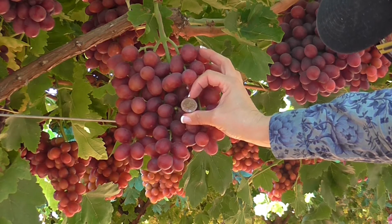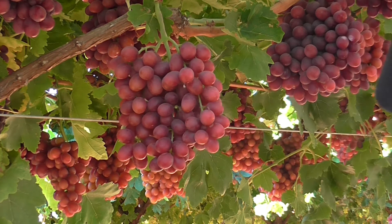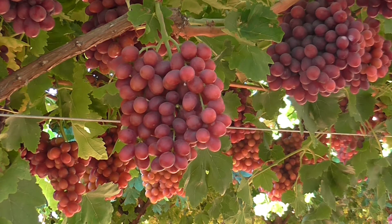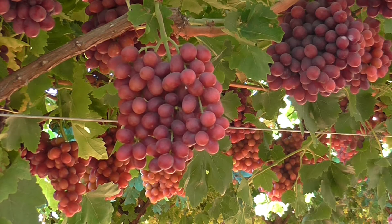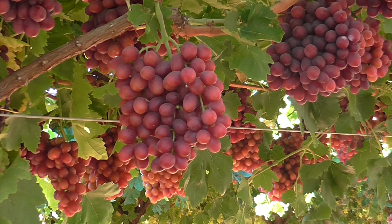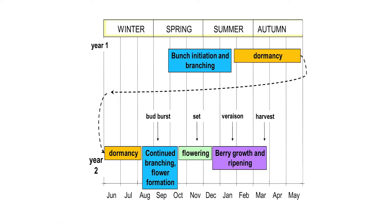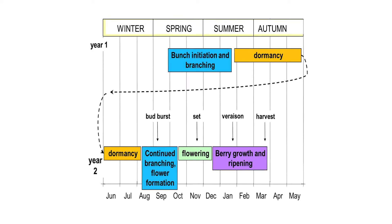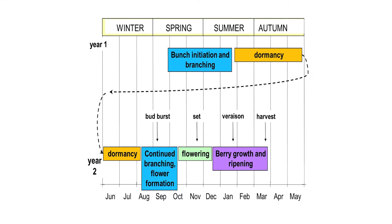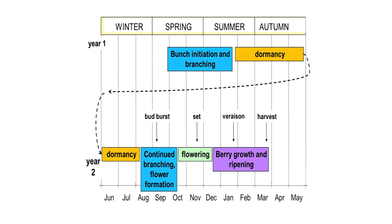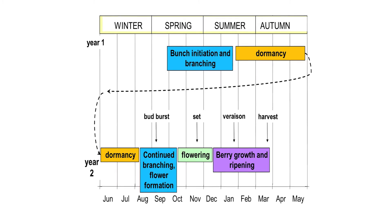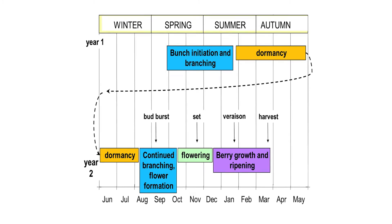This short InnoGrape video aims to provide you with some practical information on the cycle of yield development and ways that growers can assess bud fertility during the dormant period. Flower formation in grapevines, like most other spring flowering perennials, commences by forming their flower buds in the preceding growing season.